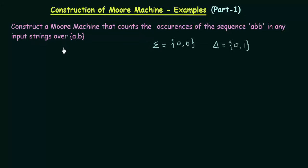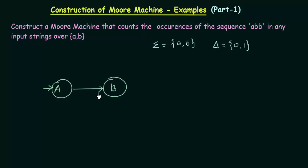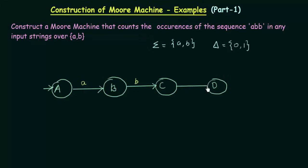In order to design this, we will first try to design a DFA that accepts all strings ending with ABB over AB. Let me start with my starting state, which I will call state A. A will be my initial state, and A will go to state B on getting input 'a', because I am trying to get the sequence ABB. B will go to state C when it gets input 'b'. Now, C will go to state D on getting input 'b'. So ABB is the sequence I am trying to get.